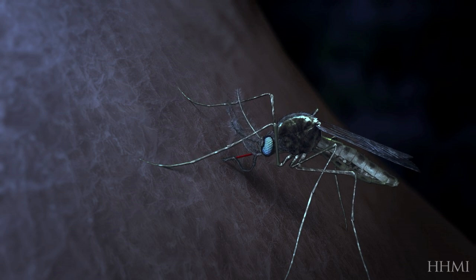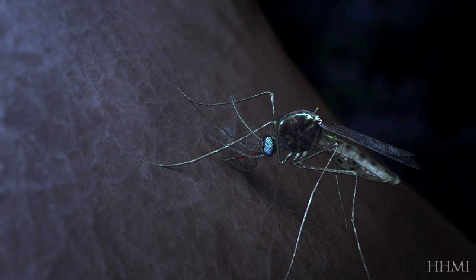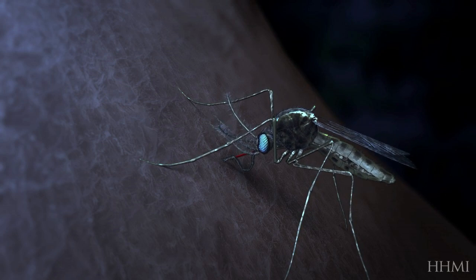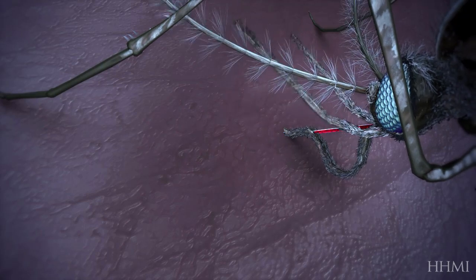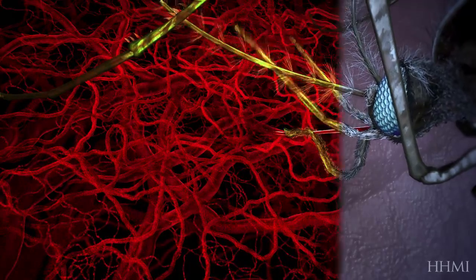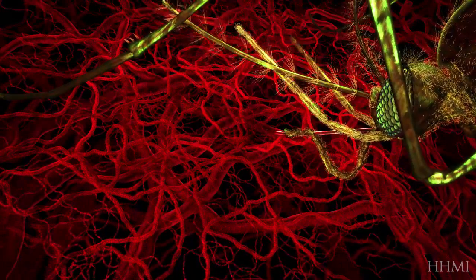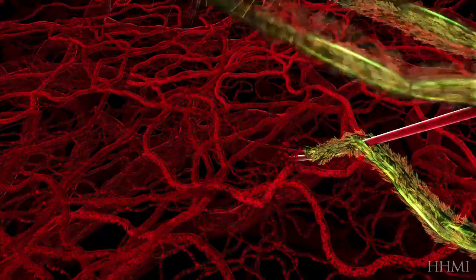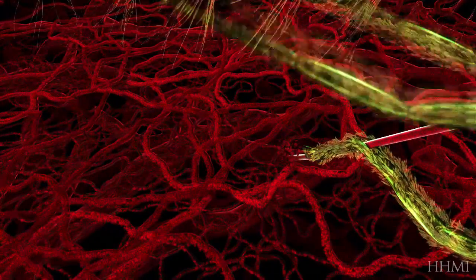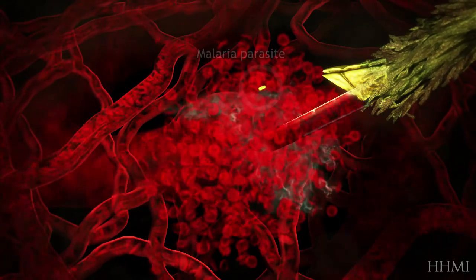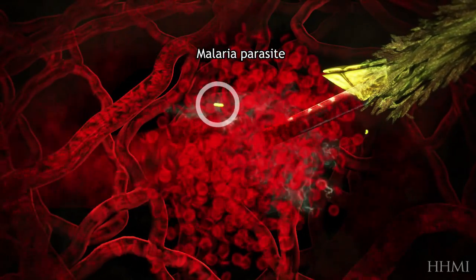This mosquito is infected with the malaria parasite. Because she is pregnant, she has become hungry for human blood. During the bite, she injects saliva to stop the blood from clotting. Her infected saliva also carries the malaria parasite.